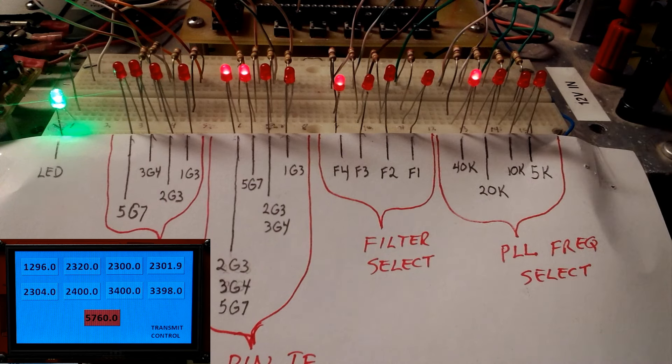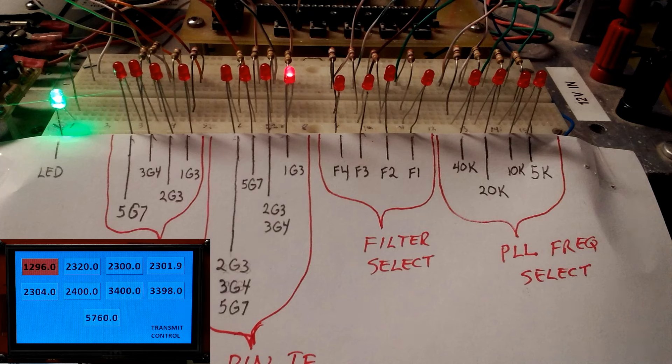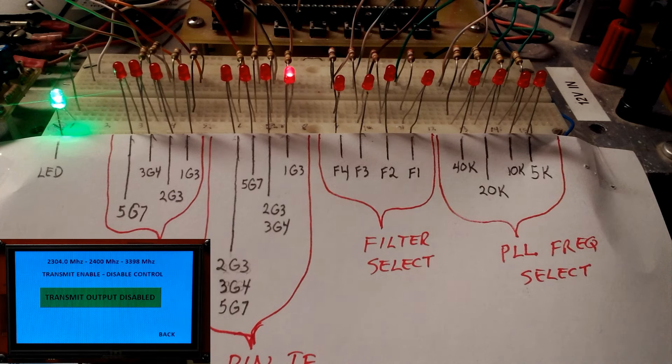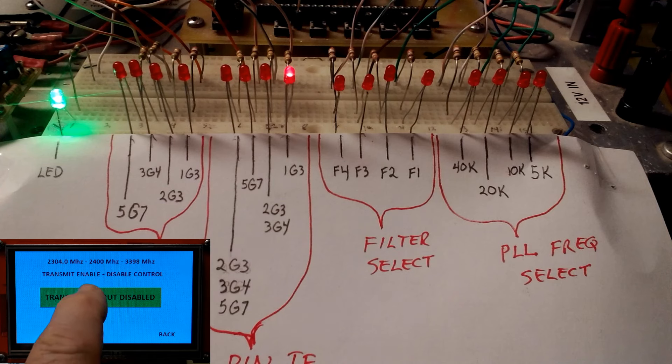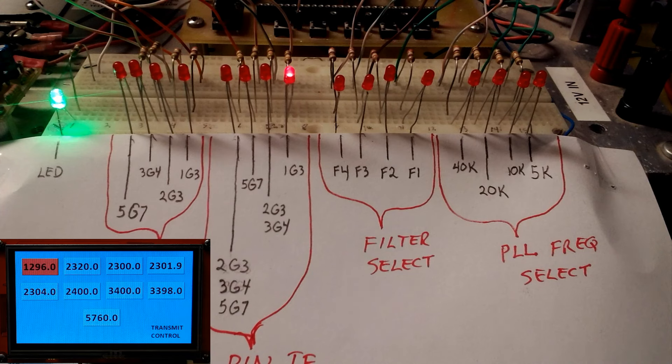So the next little novelty is how we make those other band ones do transmit. The second page on the next thing you can see where I've got a mark there, transmit enable disable control. And right now the transmits for those other band selections are disabled. We'll flip it over to enabled.